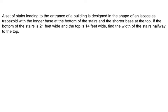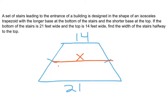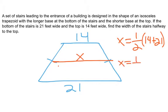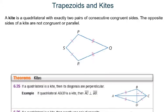A set of stairs leading to a building is designed in the shape of an isosceles trapezoid, with the longer base at the bottom and the shorter base at the top. The bottom is 21 feet wide and the top is 14 feet. Find the width of the stairs halfway up — that's the midsegment. Using the formula: midsegment = ½(21 + 14) = ½(35) = 17.5 feet.